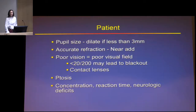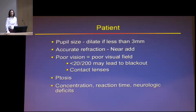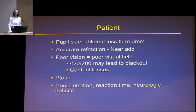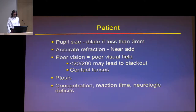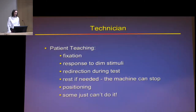Regarding patient factors: pupil size matters — with very small pupils you'll get constriction. You need accurate refraction, and the near add, because the bowl is at about 14 inches. Poor vision means a poor visual field. People with high myopia are better off using contact lenses or glasses; the machine has a lens insert but those can introduce artifact too. Ptosis, concentration, reaction time, and neurologic deficits can all affect reliability.